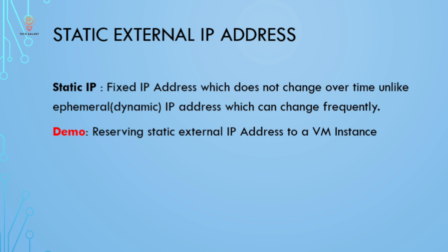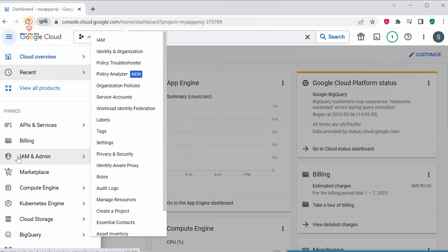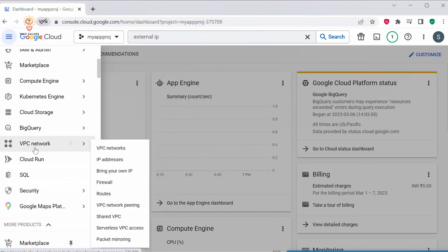Hello everyone, welcome back to my channel. In today's video we will see how to assign a static IP address to a virtual machine. Whenever you create a VM in GCP, that VM gets assigned a dynamic IP address. This dynamic IP address will change if the VM is stopped or restarted. So if you want the IP address to remain the same even after the VM is stopped or restarted, you can assign a static IP address to the VM. Let's see how to do it — under the navigation menu, search for VPC Network.